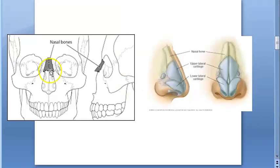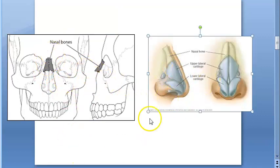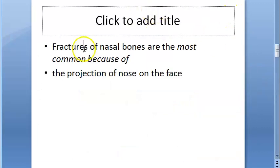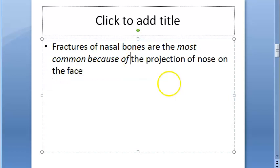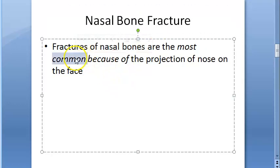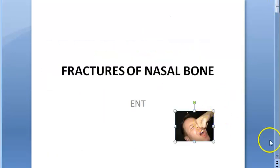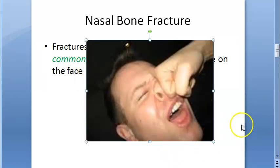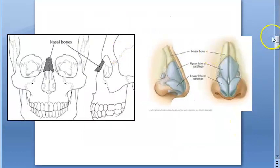The nasal bone is located here — let's look at the diagram. Nasal bone fractures are the most common because of the projection of the nose on the face. This can happen from traumatic forces, which can apply either from the front or from the side. Looking at this photo, it appears to be a lateral impact.